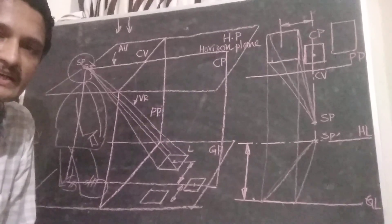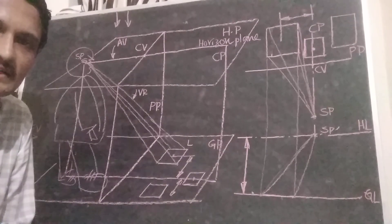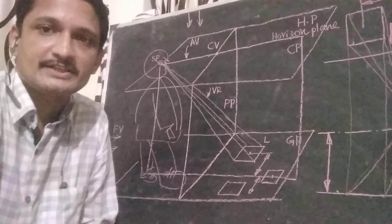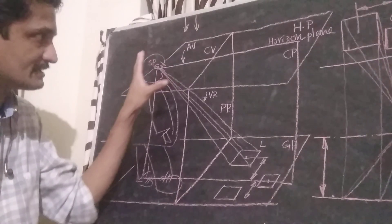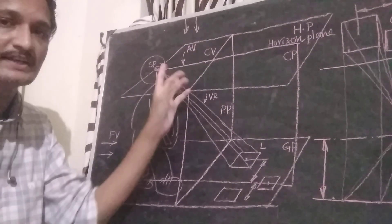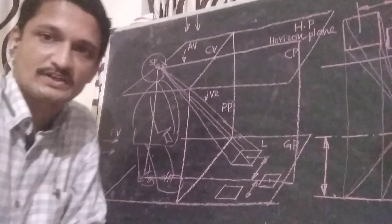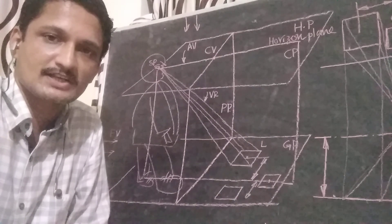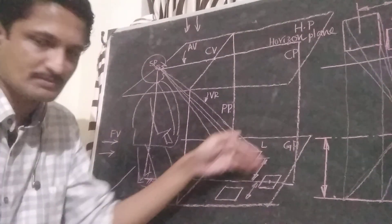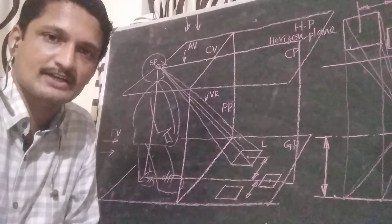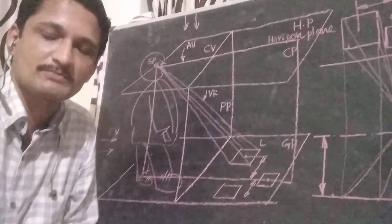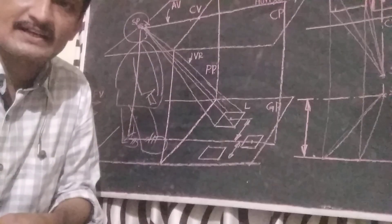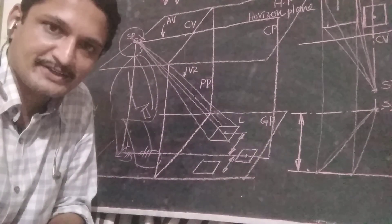Now let's talk about the details of this. This is the concept of the planes: visual planes, center of vision, axis of vision. This is the position. Thank you all.